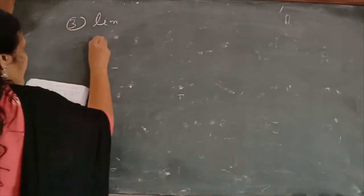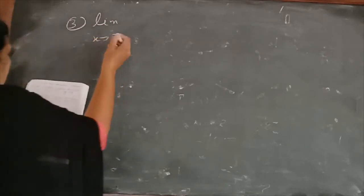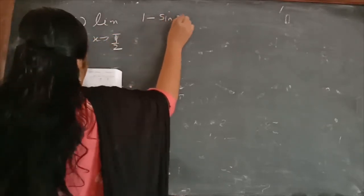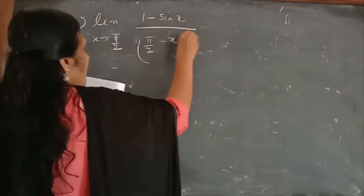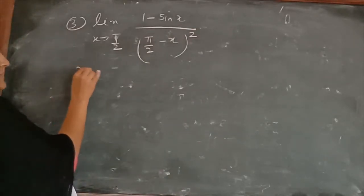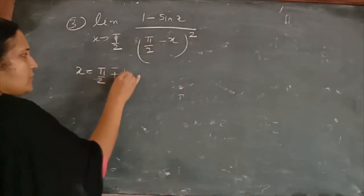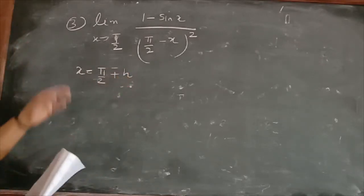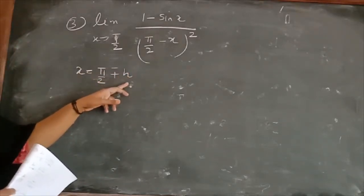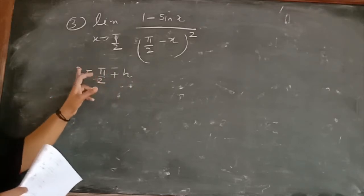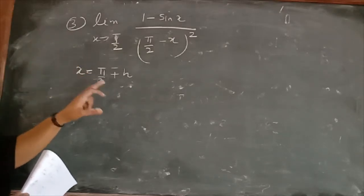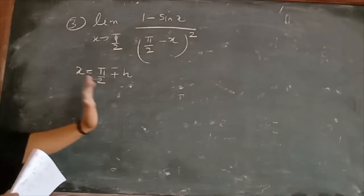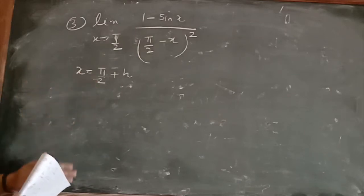Question 3: limit x tends to π/2 of (1 − sin x) / (π/2 − x)². We substitute x = π/2 + h (or π/2 − h). This uses the concept of right-hand limit, which we discussed when we started limits.